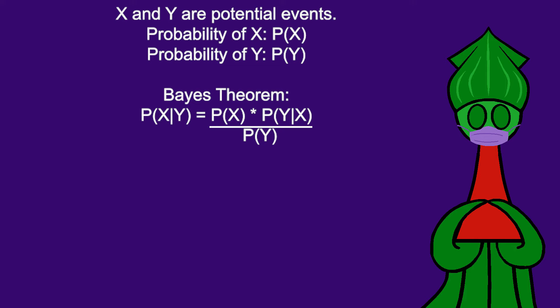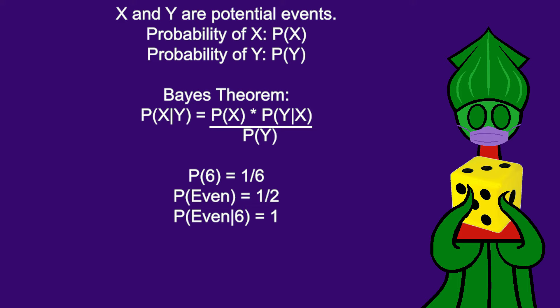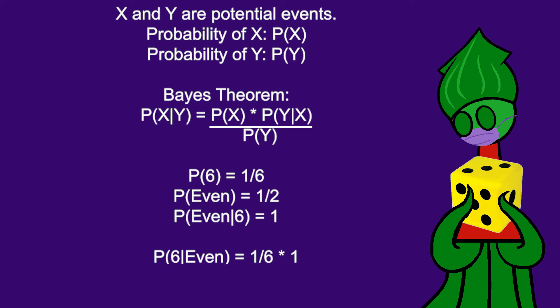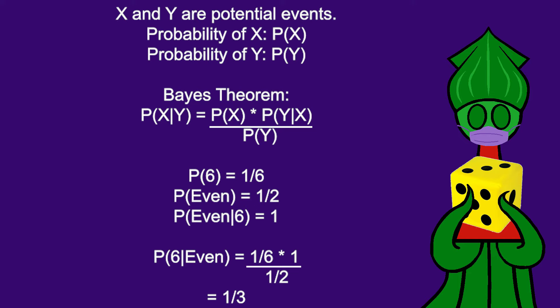The probability that the die rolls a 6 is 1 out of 6. The probability that the die rolls an even number is 1 in 2. If the die rolls a 6, it's certainly rolled an even number. So, the probability that the die rolls a 6, given that the die shows an even number, is 1 in 6 times 1 divided by 1 in 2. 1 in 3. If you roll a die and it's even, there's a one-third chance that it's a 6. That's pretty simple.